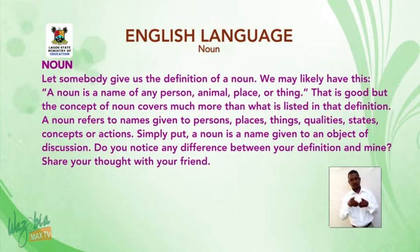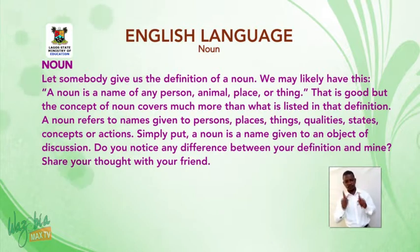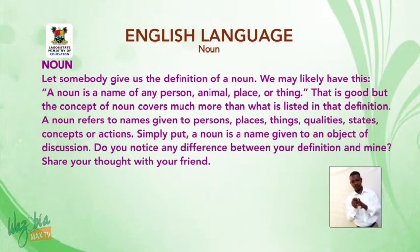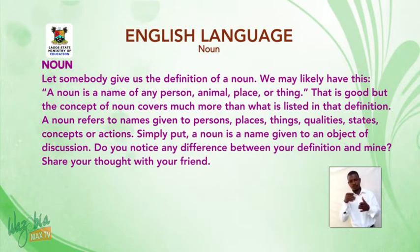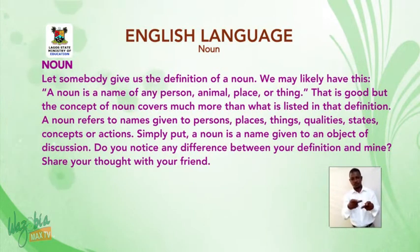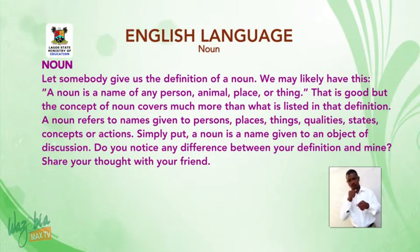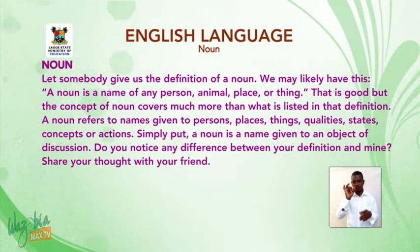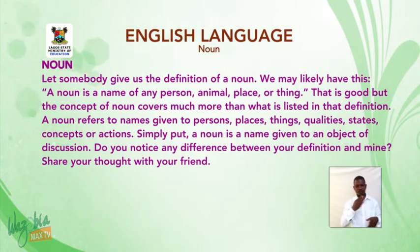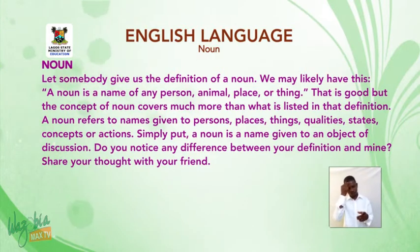Let somebody give us the definition of a noun. A noun is a name of any person, animal, place or thing. That is good, but the concept of noun covers much more than what is listed in that definition. A noun refers to names given to persons, places, things, qualities, states, concepts or actions. Simply put, a noun is a name given to an object of discussion. Do you notice any difference between your definition and mine? Share your thoughts with your friend.